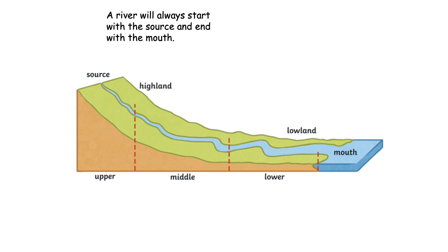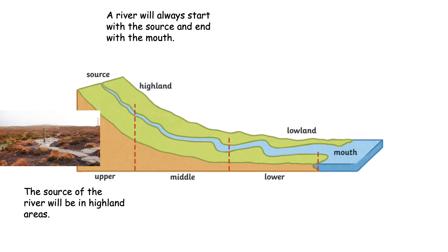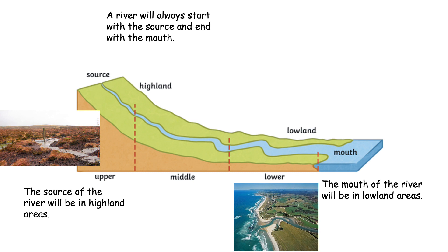Task 4 is on the shape of the river and the shape of the valley in the different parts of the river. A river will always start with a source and end with a mouth. The source of the river will always be in highland areas — places like the Peak District, the Lake District, Snowdonia in Wales. The mouth of the river will always be in lowland areas, so the areas next to the coast. We've got Preston, which is quite close to us, in a lowland area right next to where the River Ribble is — and that is where the mouth of the River Ribble enters the Irish Sea. The mouths of rivers are always in the lowland areas.